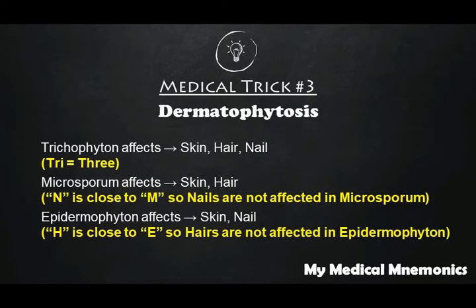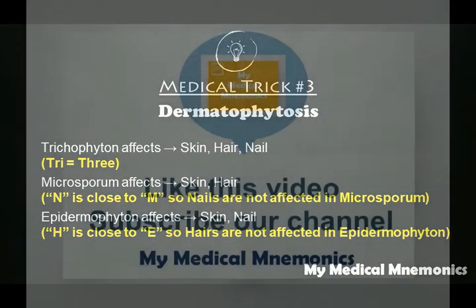Similarly, Epidermophyton affects skin and nail but does not affect hair. Alphabetically, H is close to E, so in Epidermophyton, H — hair — is not affected. This simple trick helps you remember which genera of dermatophytes affect which structure of the body.